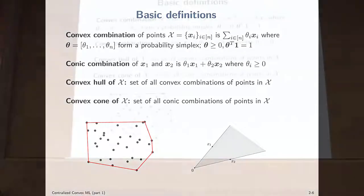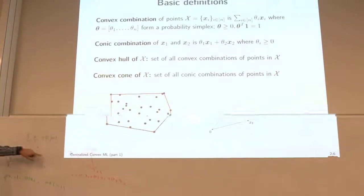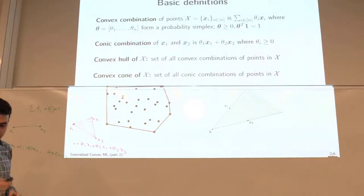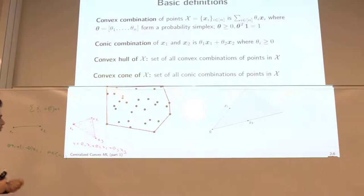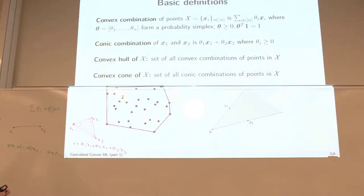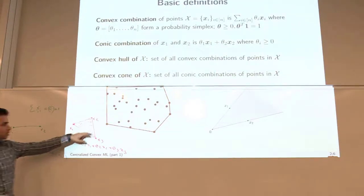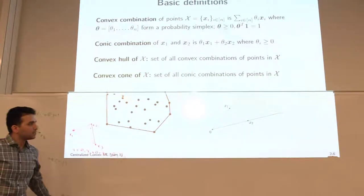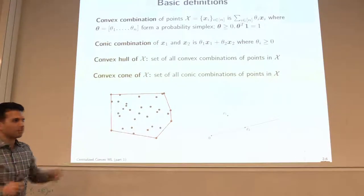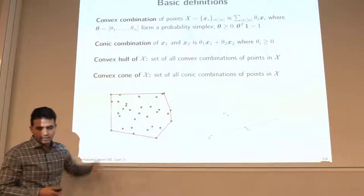Convex hull is the set of all convex combinations. You are just changing those thetas as you can — the only constraint is the probability simplex. The set of all those points is called the convex hull. For two points, the convex hull is just this line. For three points it's a triangle. In a general case of n points in two dimensions, it looks like a polygon — and you can imagine this for more than two dimensions.